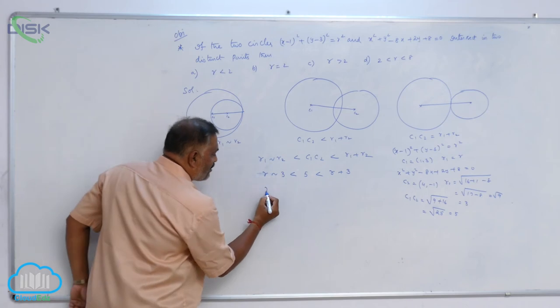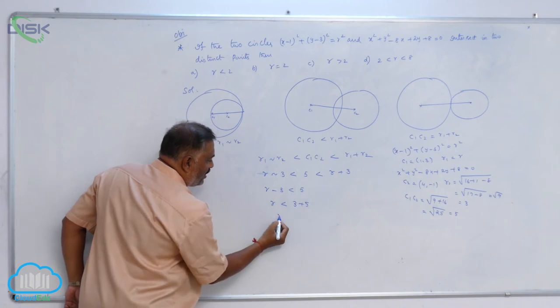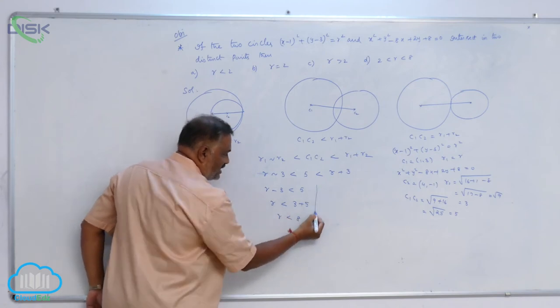Now consider these two: R minus 3 is less than 5, so R is less than 3 plus 5, giving us R less than 8. This is the first condition.